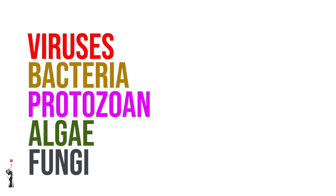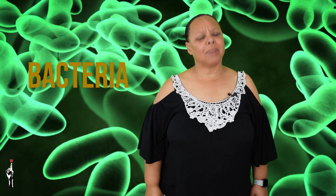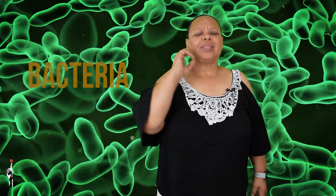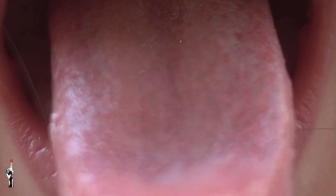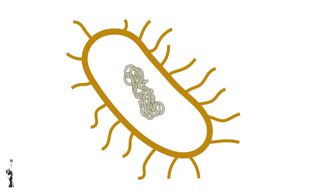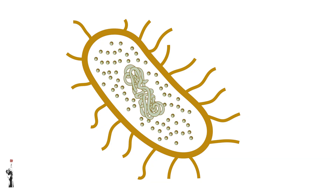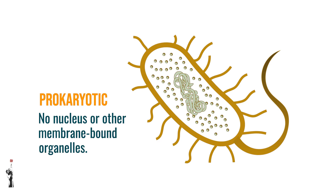Next up, let's look at bacteria. Bacteria is one of the most common microorganisms on earth. These little fellas are everywhere, even in your body. Bacteria are single-celled organisms and much simpler than the cells that make up plants and animals. In fact bacteria are prokaryotic, which means they don't have a true nucleus or other membrane-bound organelles like plant and animal cells. Instead, their DNA floats freely inside the cell.